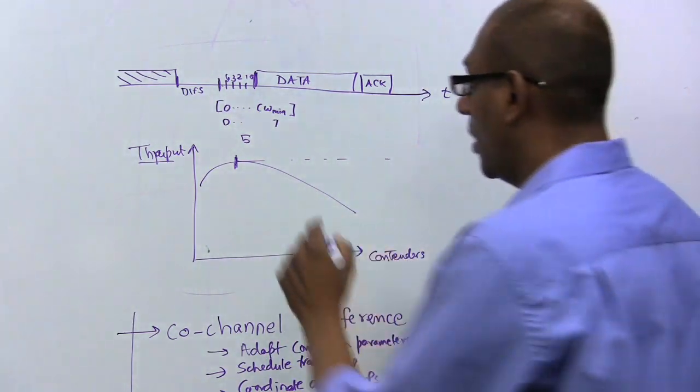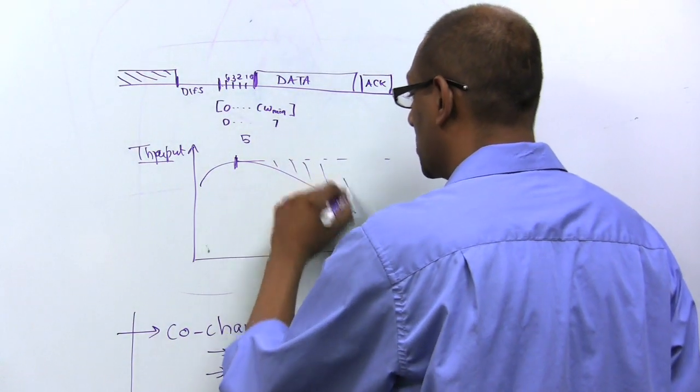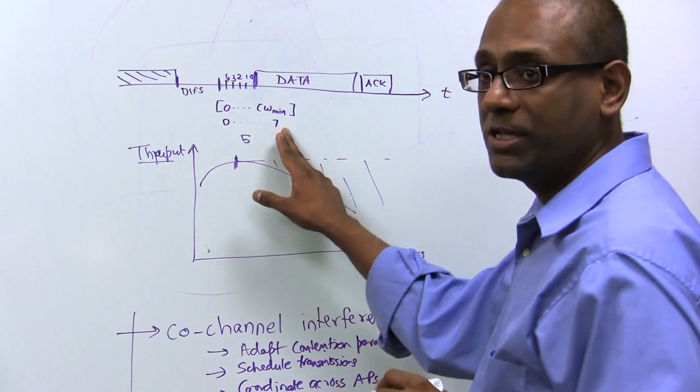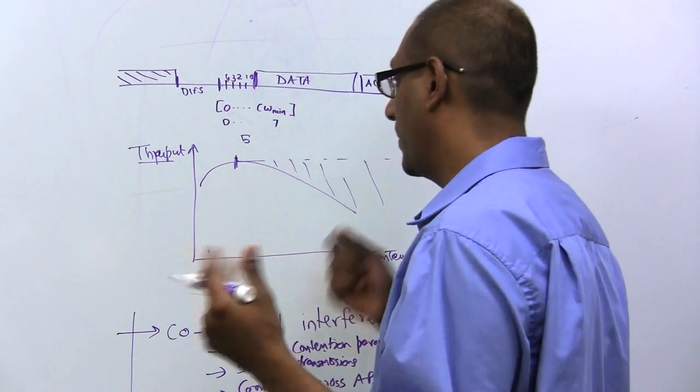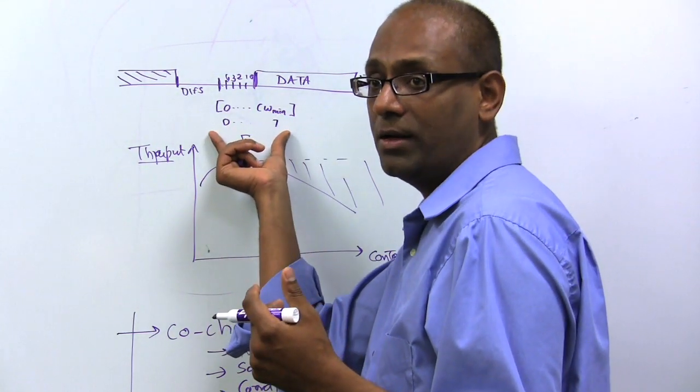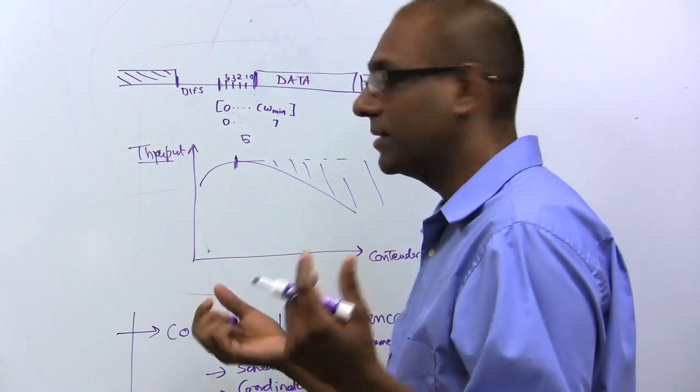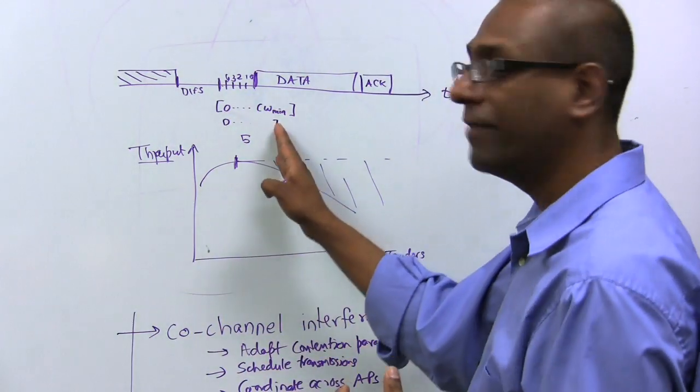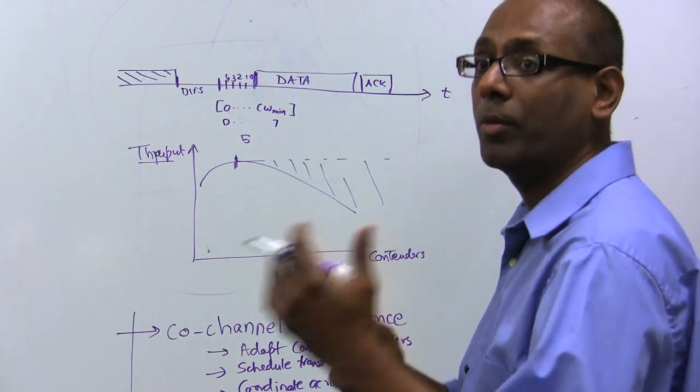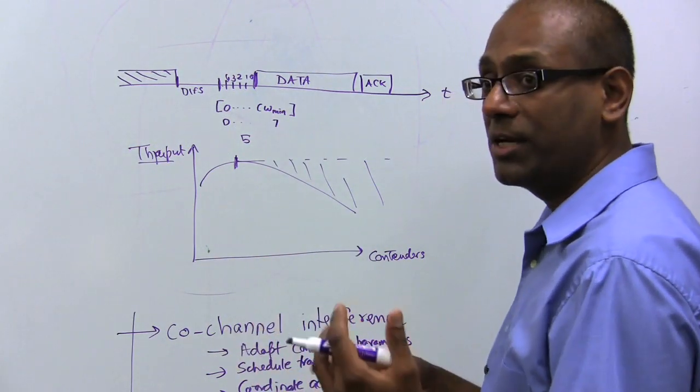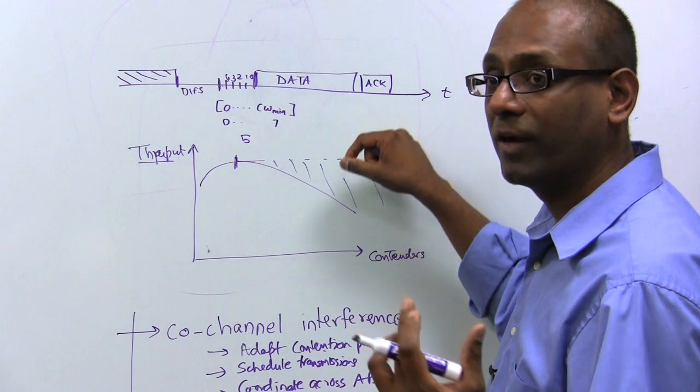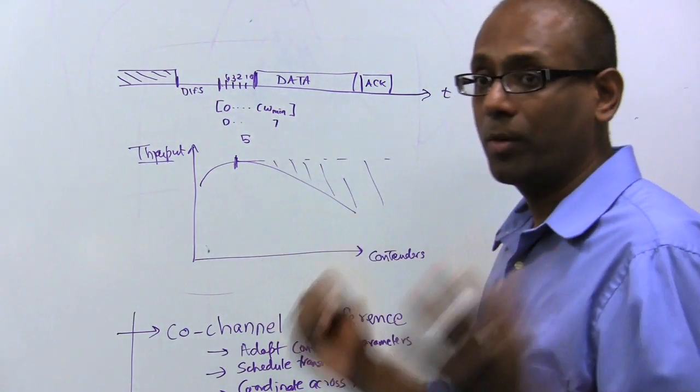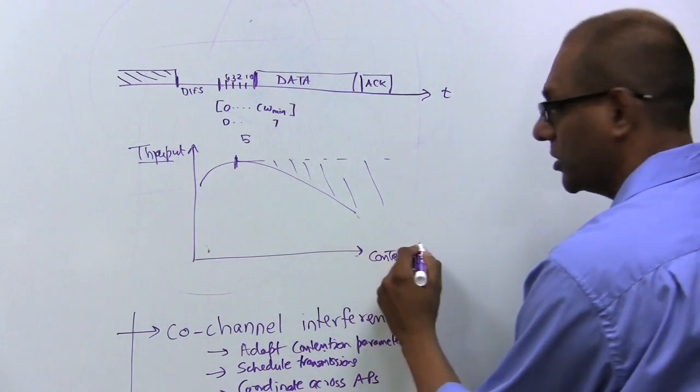Why does this utilization go down? All of this is essentially contention loss. So if, for example, there's a value between 0 to 7, if there are two devices that are picking the same values between 0 to 7, there is a one-eighth chance that there is a collision. If you have more devices with the same value, obviously the collision probability goes up. At the extreme case, if you have an infinite number of devices picking a value between 0 and 7, the collision probability is 1, which means the channel utilization goes to 0.